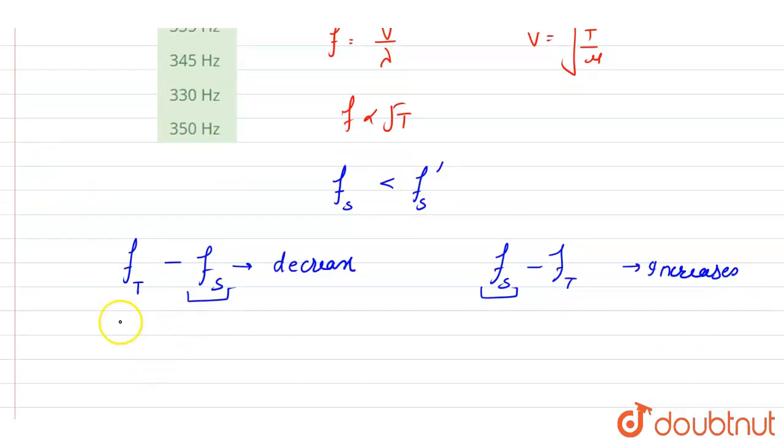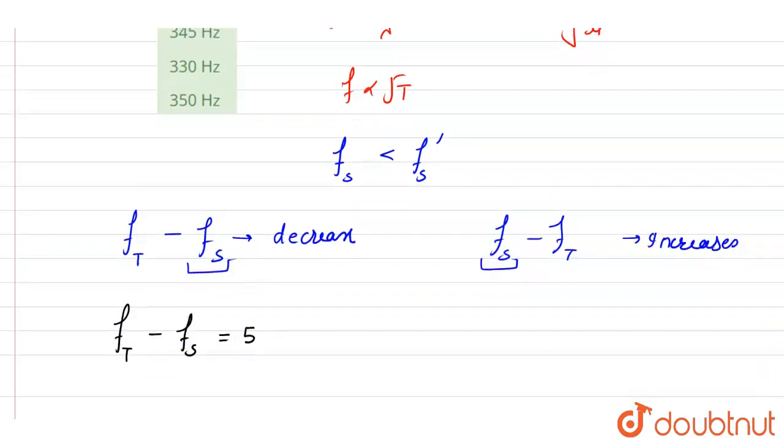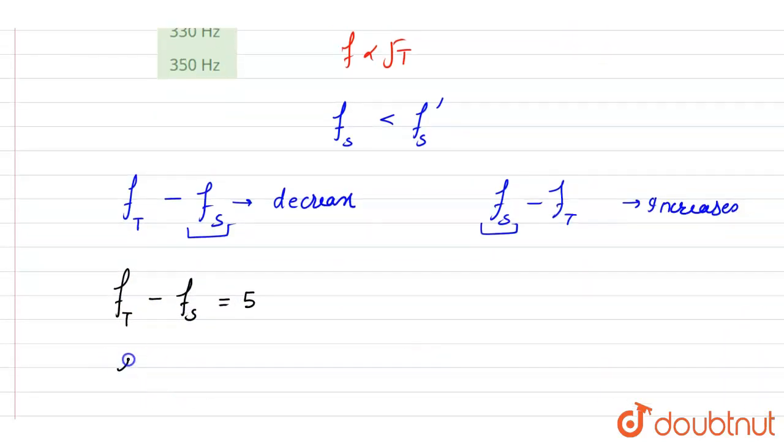So we'll write down: it is 5, so f_T minus 5 will be f_S, that is the frequency of the sonometer wire. So it is 340 minus 5 equals 335 Hz.